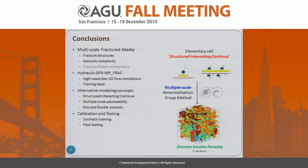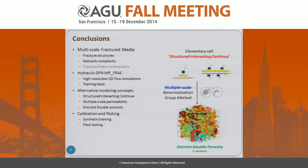Question: Can you comment on what kind of field tests are required for validation or verification? Answer: There are basically two types of information we would use: geometrical information, which could be used as a prior in a Bayesian inverse methodology, and hydraulic test data, which would be used as data to be fitted to the model.